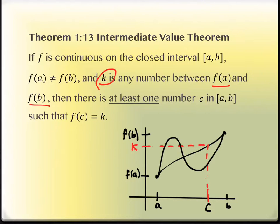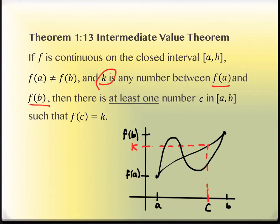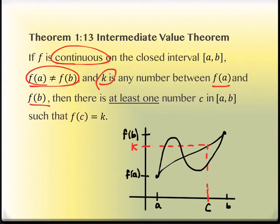We can do problems related to the Intermediate Value Theorem knowing these facts. It says to verify that the Intermediate Value Theorem applies. Verifying it applies means checking that the conditions are being held. The conditions are: F of A does not equal F of B, and it's continuous — because if there are gaps or a jump, this wouldn't have to hold. We also need the interval to be closed.